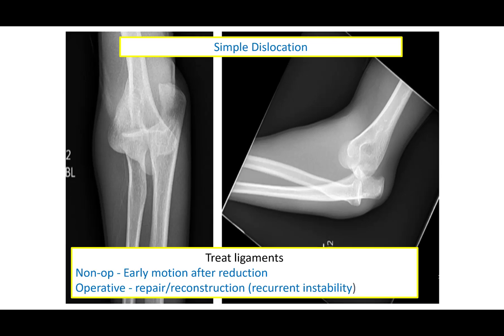Here is an example of a simple elbow dislocation on AP and lateral images. This is likely to be treated non-surgically; however, if there is recurrent instability or inability to achieve reduction, operative management may be considered.